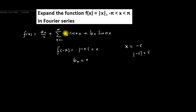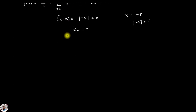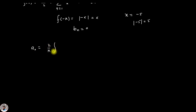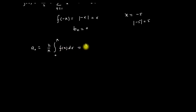In this case we have to find only the values of a₀ and aₙ. We know that the equation for a₀ is: a₀ = (2/π) × integration from 0 to π of f(x) dx. Here we put the value of f(x), so we get: a₀ = (2/π) × integration from 0 to π of x dx.